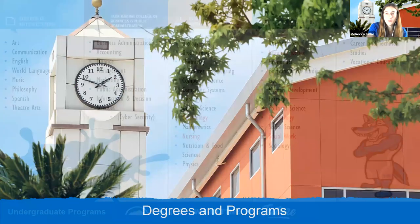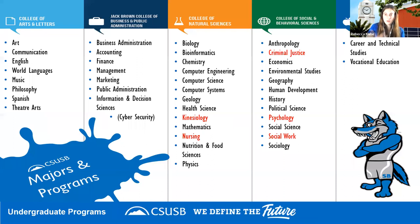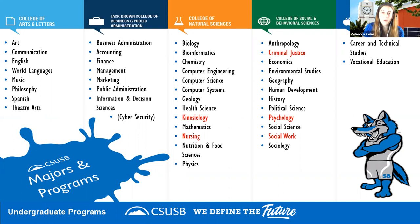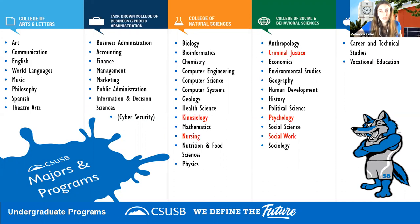Returning to degrees and programs: at CSUSB some majors are marked in red as 'impacted.' This means that last year, more academically eligible students applied to those programs than there were seats available. As a result, those impacted programs set higher admission criteria beyond the standard campus admission requirements.